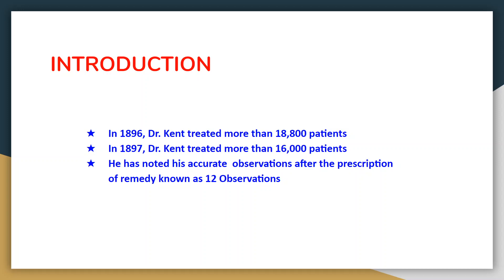First, let us have a look at the introduction. In the year 1896, Dr. Cain treated more than 18,800 patients. And in 1897, Dr. Cain treated more than 16,000 patients. He noted accurate observations after the prescription of remedy, which are known as the 12 observations. These observations are from Dr. Cain's meticulous notes while treating so many patients, and he included them under the title of Cain's 12 observations — namely, 'Prognosis after observing the action of remedy.'